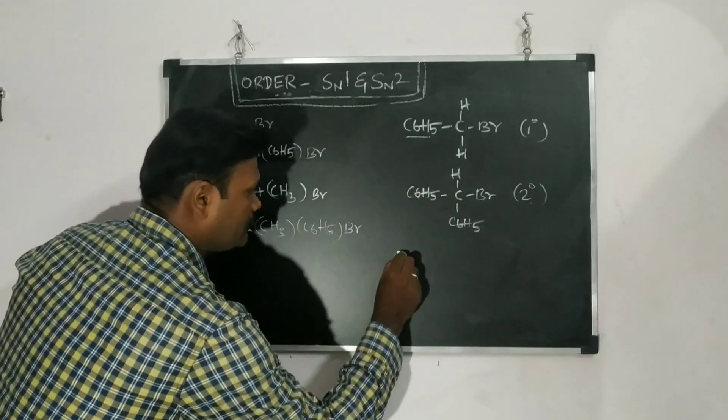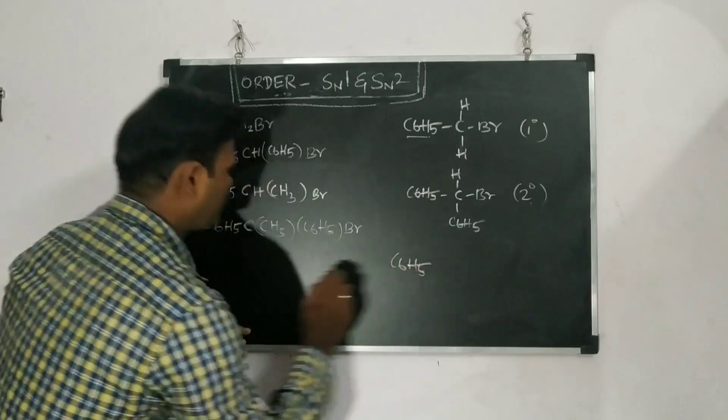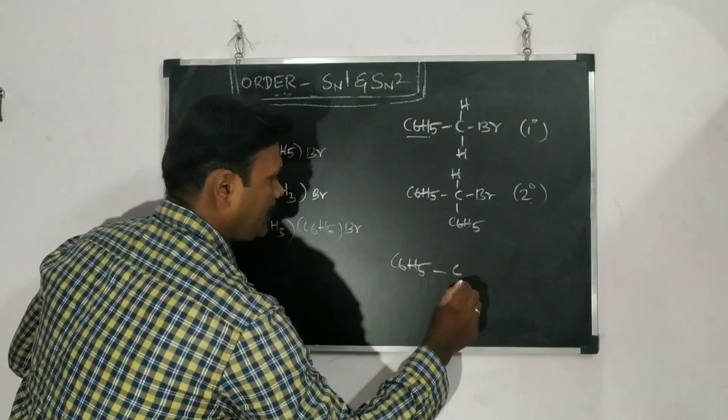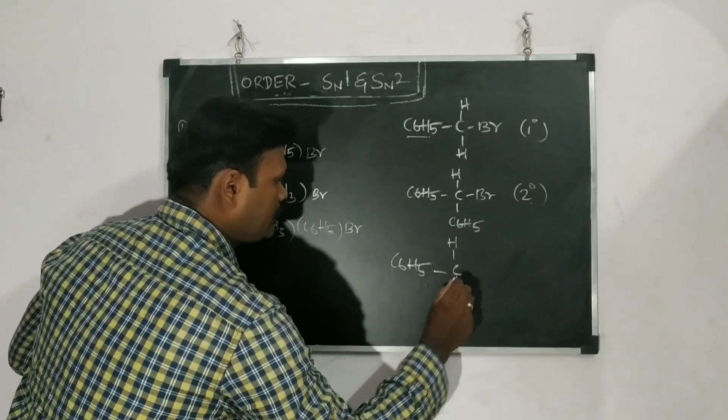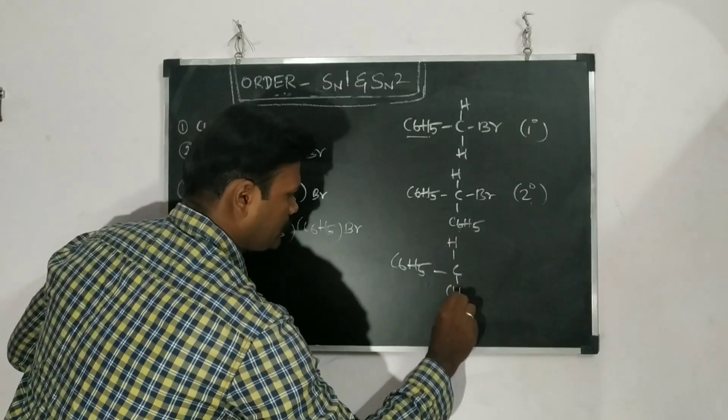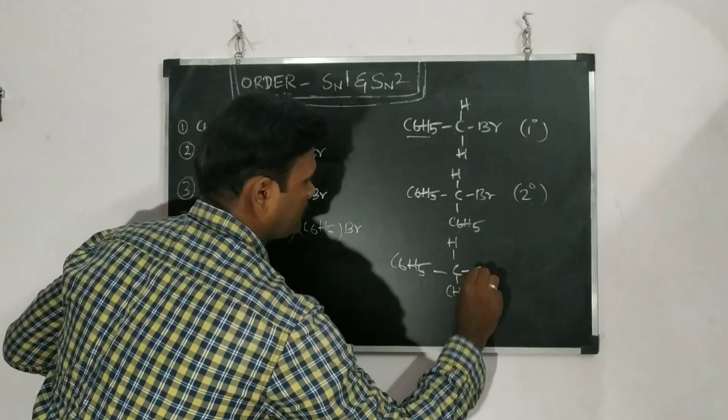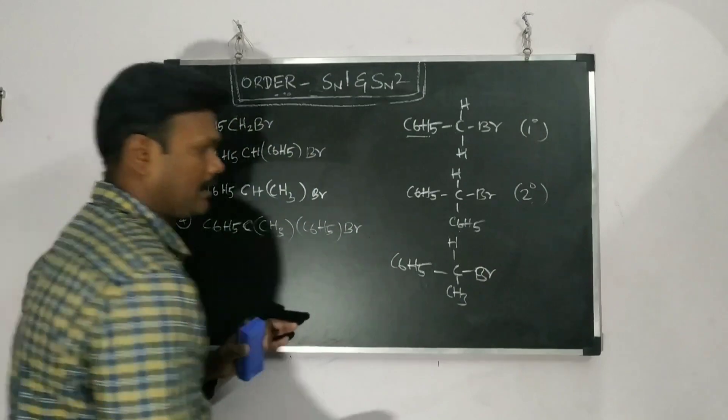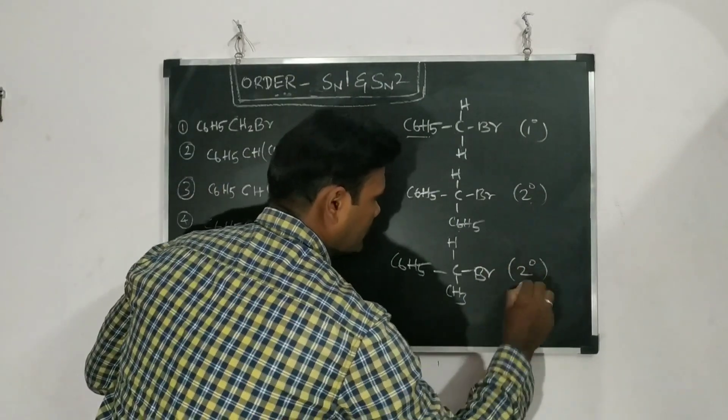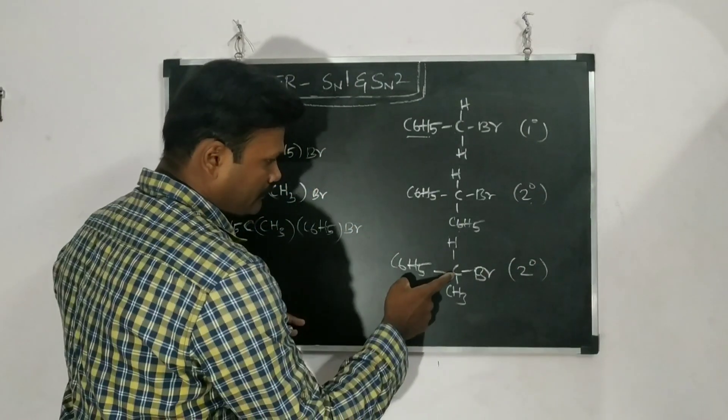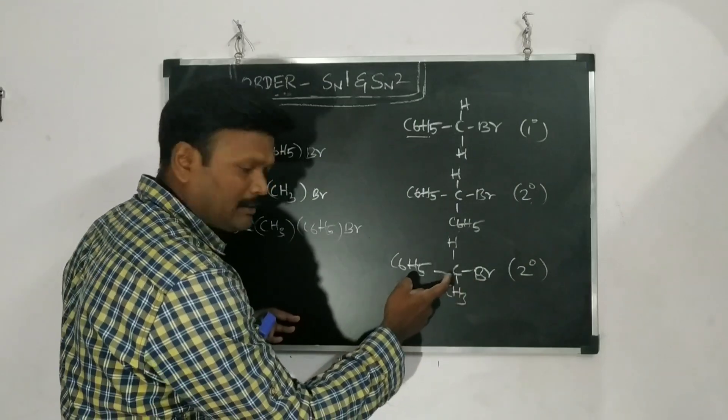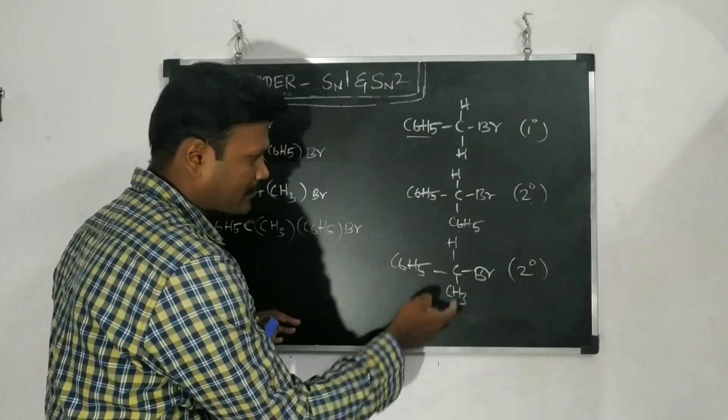And the third component we can see. That is C6H5 given. And here also same. Here also H is given. Instead of C6H5, here CH3 will be given. So it will be given like this. Here it is also 2 degree. How it will be 2 degree? So it is the functional group. Functional group attached to the carbon. The carbon is attached to two carbons. That is what is 2 degree.